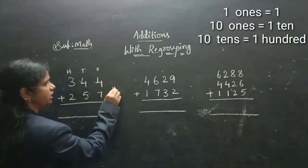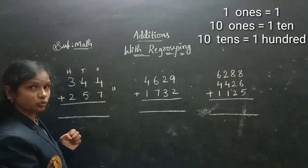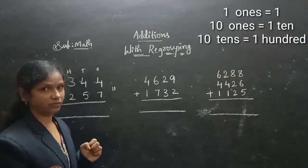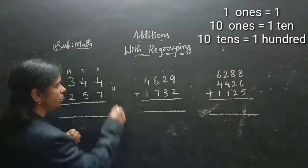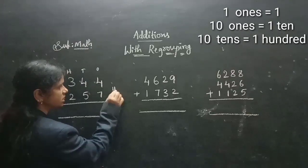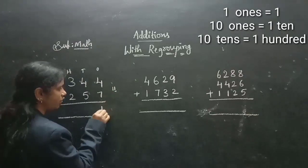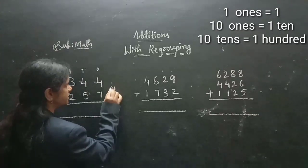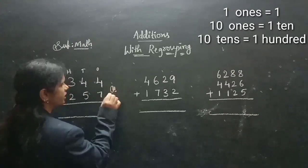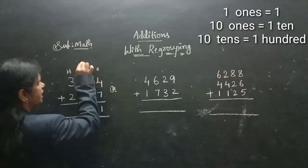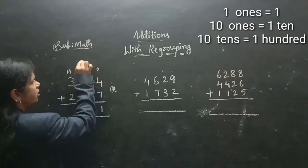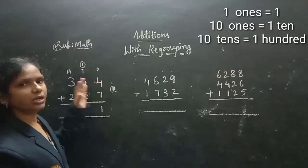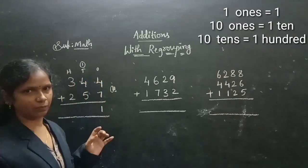Here you see 11 — a 2-digit number. So, already I told you this activity children. The 1's I am writing as the answer, and the 10's — whatever this is — I am taking as a carry on the next place, nothing but the 10's place.